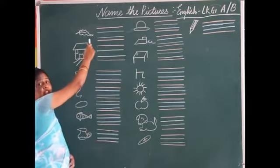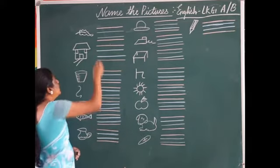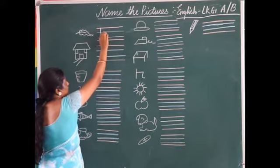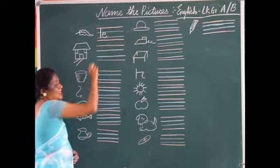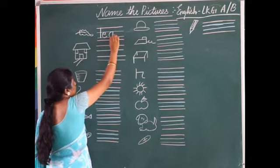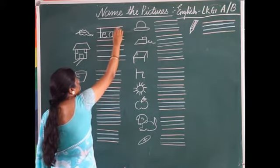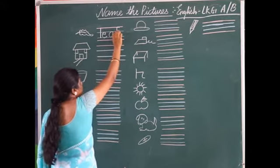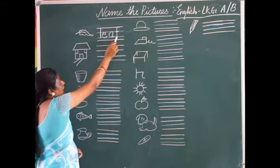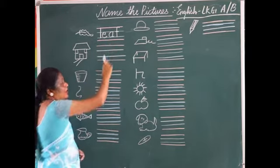This is the picture of a leaf. What is this? This is the picture of a leaf. Now how are we going to write the spelling 'leaf'? Standing line makes the letter L. A small sleeping line with a curve joining two blue lines makes the letter E. A curve with a standing line and a small tail at the end makes the letter A. A curve with a standing line and a sleeping line in the middle makes the letter F. L-E-A-F, leaf. You say once more: L-E-A-F, leaf.